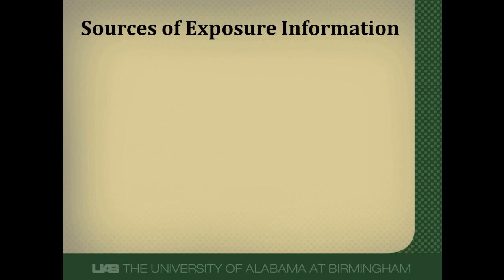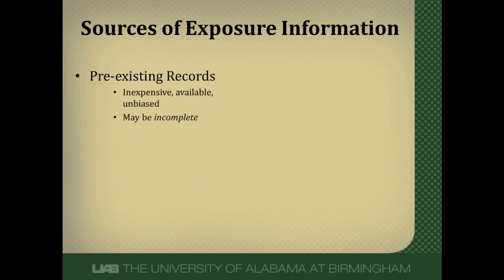Where could researchers get information on exposure? There are four different places. First, they could use preexisting records. These are easy to use and readily available, but the problem is they can often be incomplete because these records — physicians' records or administrative databases — were not designed for study purposes, so sometimes they lack information that researchers might need.